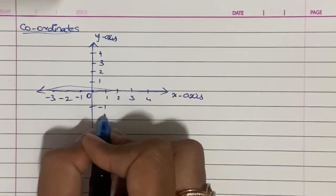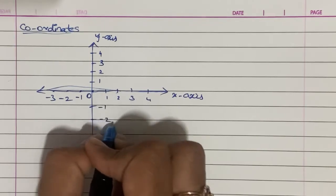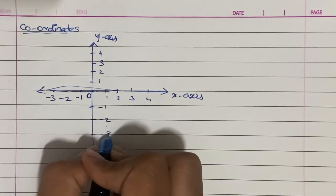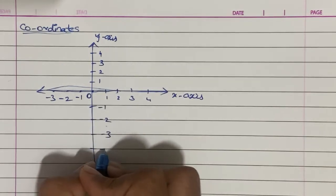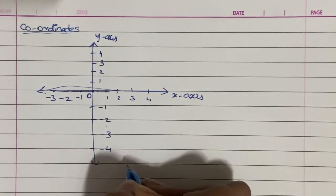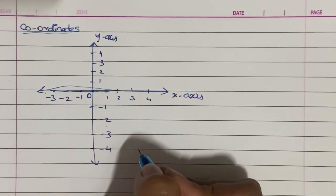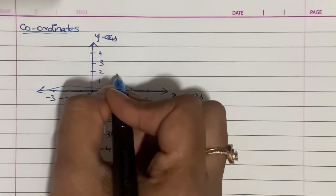It also has coordinates of negative values — minus 1, minus 2, minus 3, minus 4 on the y-axis as well. So, that is the coordinate center.